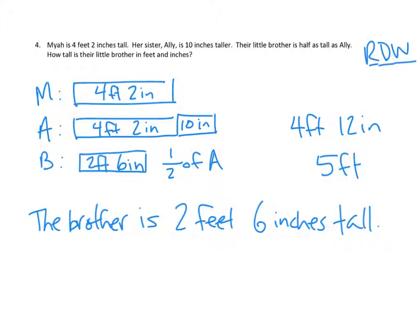The hard work really is in the reading and the drawing in some of these. Once we get to the calculations, this isn't very difficult. We can add ten inches to four feet two inches, and we can divide four feet twelve inches or five feet in two pretty easily. So it's important that we get our understanding of the problem right first, and that we get a good, accurate drawing of our problem first, and then the rest of it will fall suit.